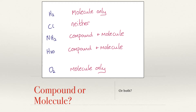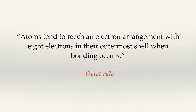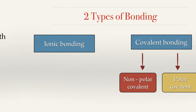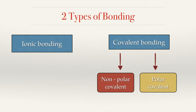All compounds are molecules, but not all molecules are compounds. The octet rule states that atoms tend to reach an electron arrangement with eight electrons in the outermost orbit when bonding occurs. You should already be familiar with ionic and covalent bonding from junior cycle. Before your leaving certificate, you need to be aware of the subdivisions within bonding, which only applies for covalent bonding.